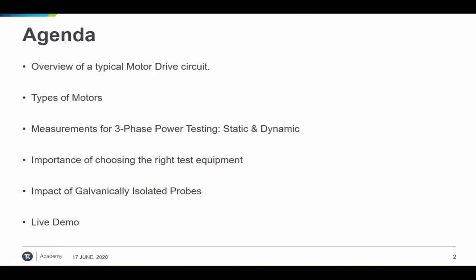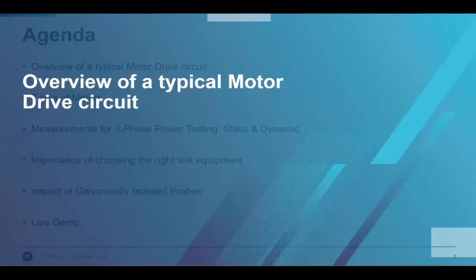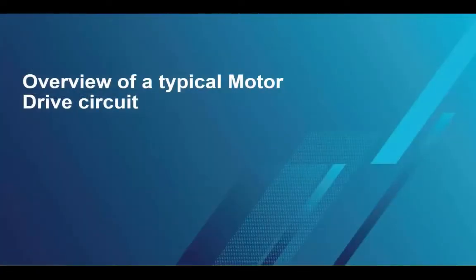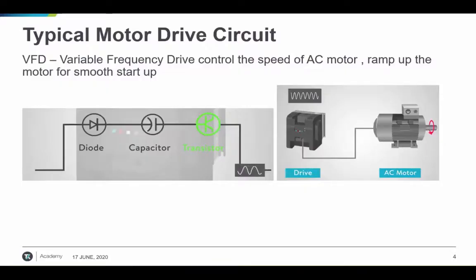The first topic is an overview of a typical motor drive circuit. To understand a typical motor drive circuit, we can look at a VFD or variable frequency drive. This is used for running an AC motor at variable speeds or to ramp up the motor for a smooth startup. They work by adjusting the frequency to control the speed of the motor.